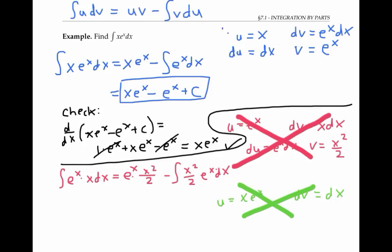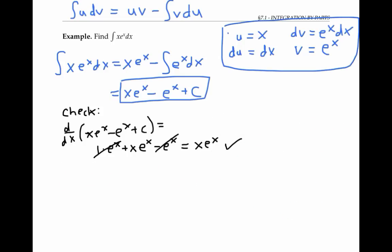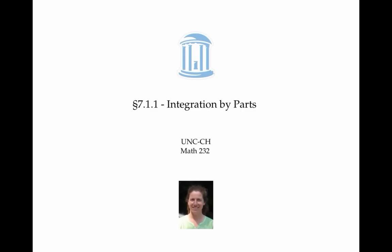So the first choice turned out to be the best choice for u and dv. Integration by parts works by replacing an integral of the form ∫u dv with the equivalent expression u times v minus the integral of v du, which is hopefully easier to compute.